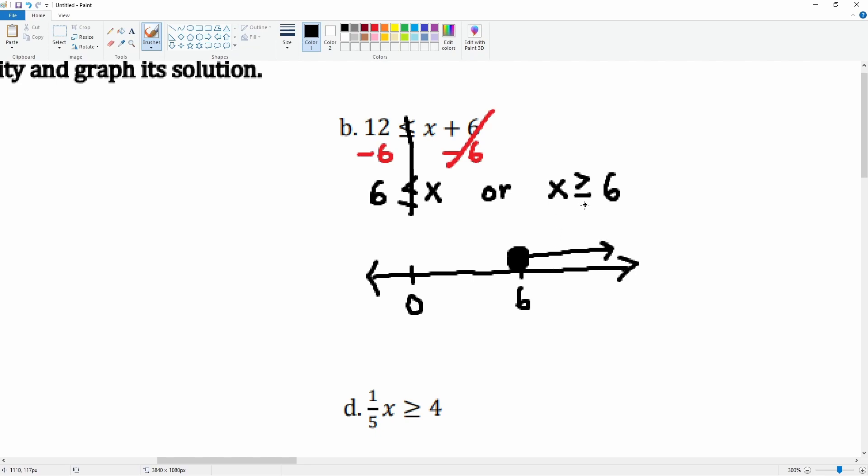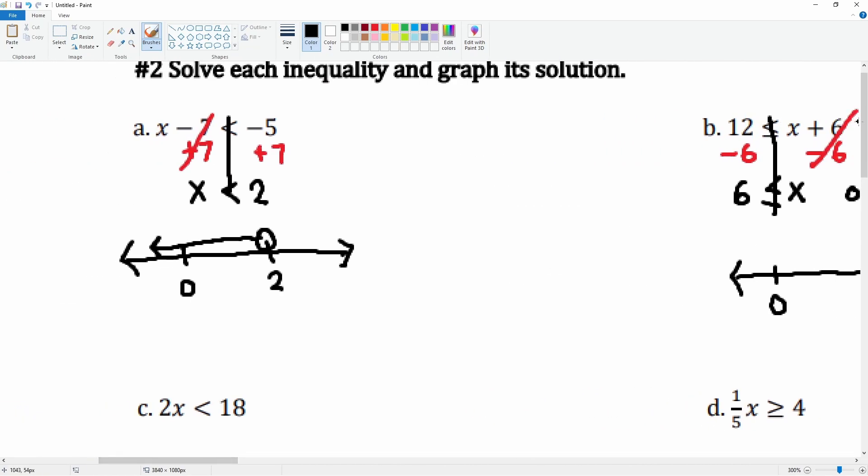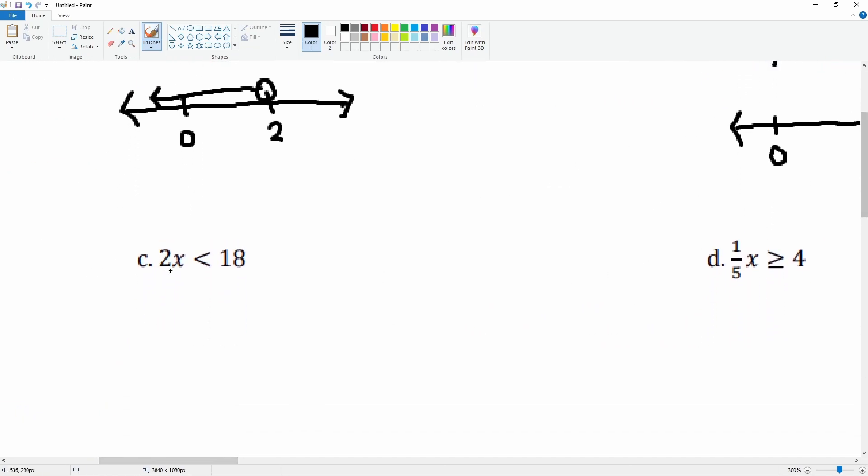Here, let's draw the line down that middle. The 2 is attached via multiplication to the x. We're going to divide by 2 on both sides. 2 divided by 2 cancels, leaving you with the number 1. Bring down the inequality symbol. 18 divided by 2 becomes 9.